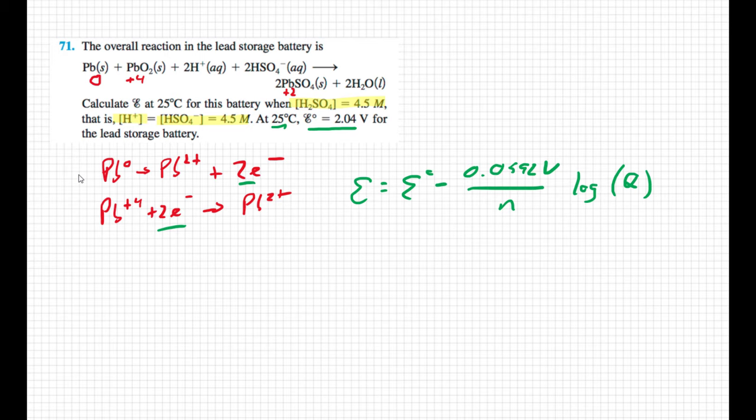So the only thing we have to find out is Q. If we look at our balanced equation, the products are a solid and a liquid, so they don't show up in my equilibrium expression. In my reactants, lead is a solid and lead 4 oxide is a solid. So the only things that appear are the hydrogen ion squared and the bisulfate ion also squared. We've been told those concentrations are 4.5 molar. So I have 1 over 4.5 molar squared times 4.5 molar squared, so that's 1 over 4.5 to the fourth power. That equals 0.0024.